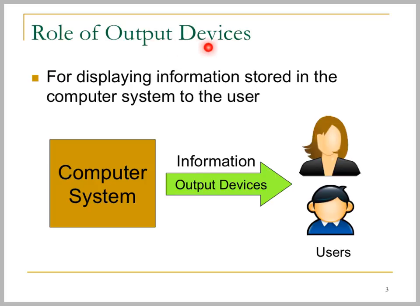The role of the output device is to display the information stored in the computer to the user. So the data or information they actually store in the computer is displayed to the user through the output device.